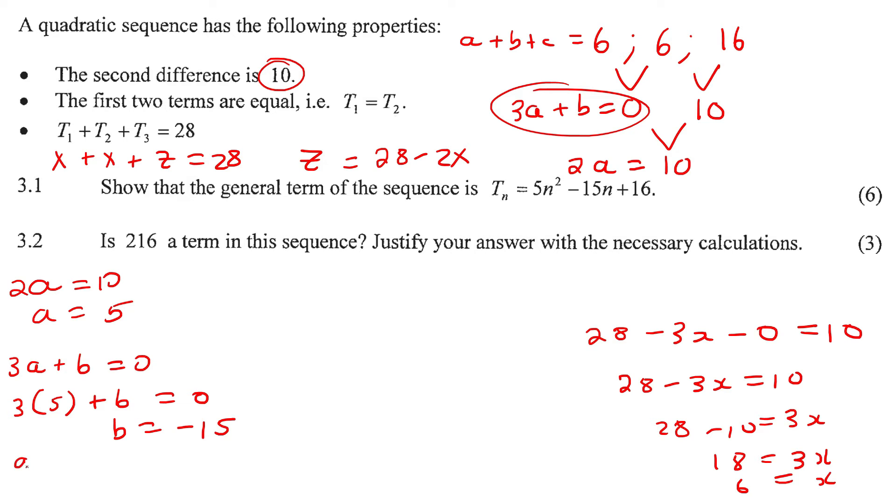And then a plus b plus c is 6, so a is 5, b is negative 15, and then c, and that's all 6. If you work out c, you would get 16. So we know that the formula of a quadratic is a n squared plus b n plus c. So a is 5, b is minus 15, and c is 16. There we have it, that was a good question.